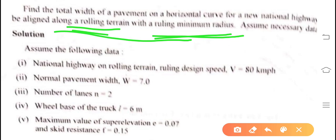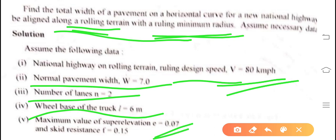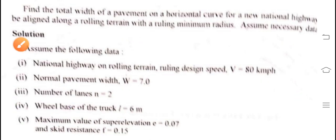For the national highway on rolling terrain, make the following assumptions: ruling design speed = 80 km/h (minimum) to 100 km/h (maximum); normal pavement width w = 7 meters for national highway and state highway; number of lanes = 2; wheel base of truck l = 6 meters (standard); maximum super elevation e = 7%; lateral coefficient of friction f = 0.15.